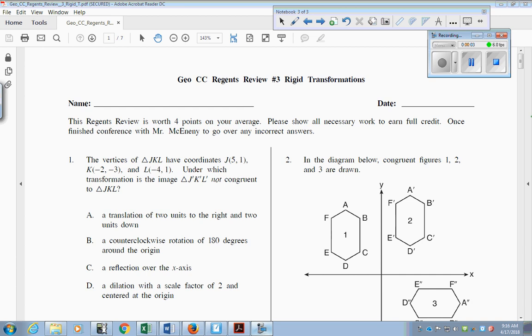Hey everyone, we're going to look at Regions Review number 3 for Geometry Common Core, which is on rigid transformations. The first thing you're going to need is to remember some of the rules dealing with reflections, rotations, dilations, and translations.